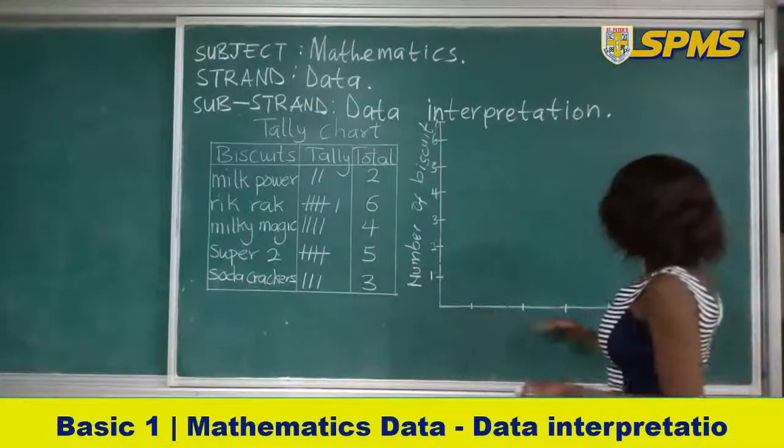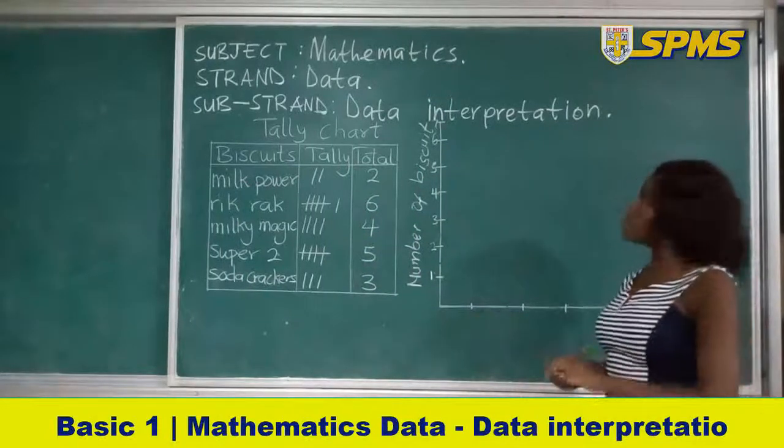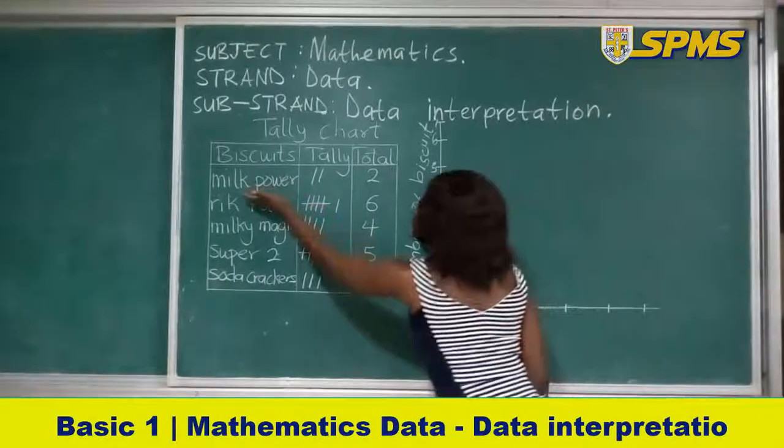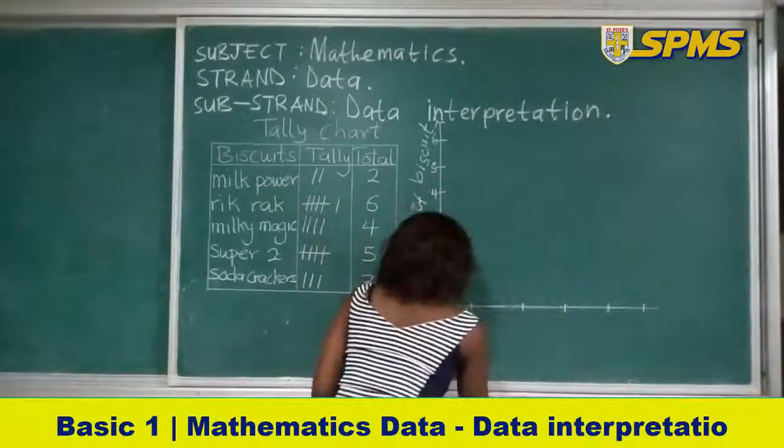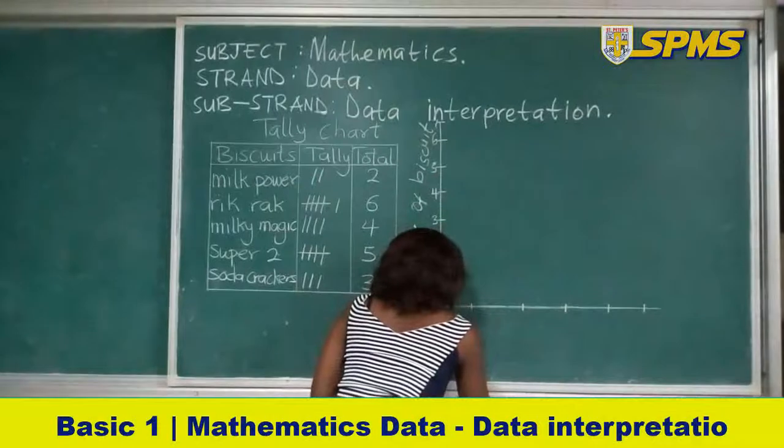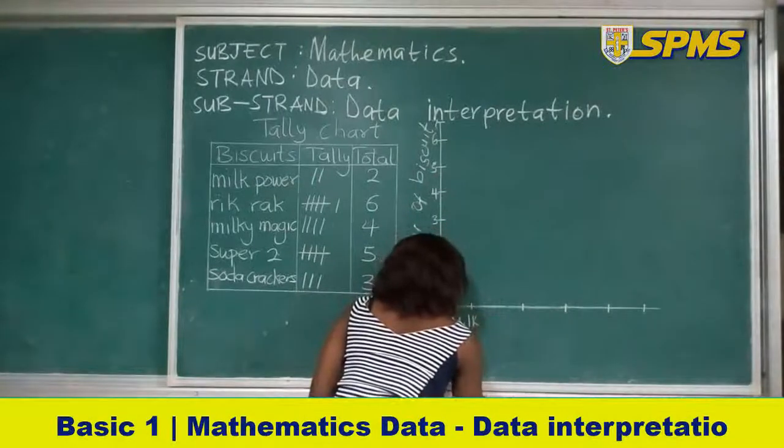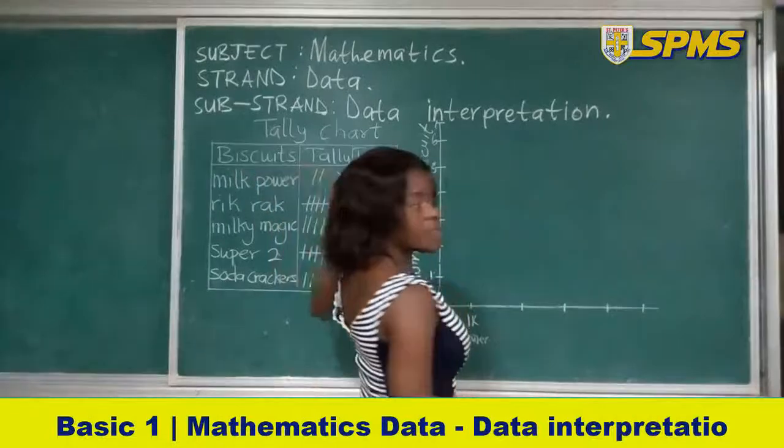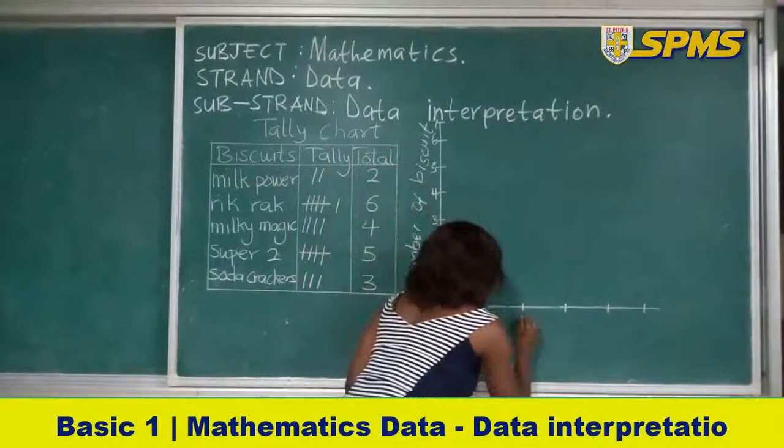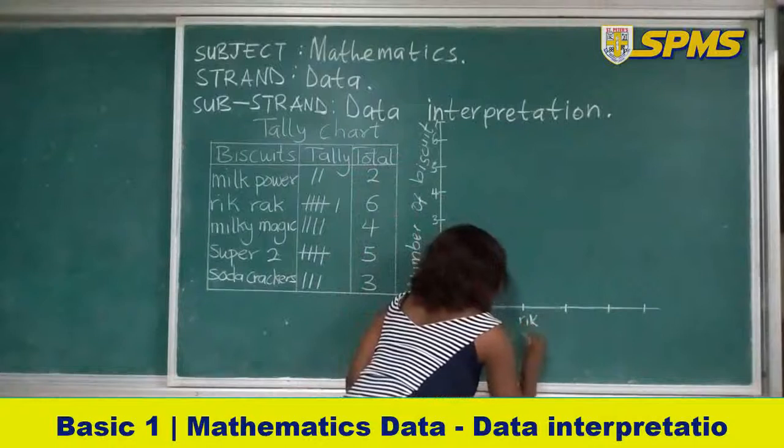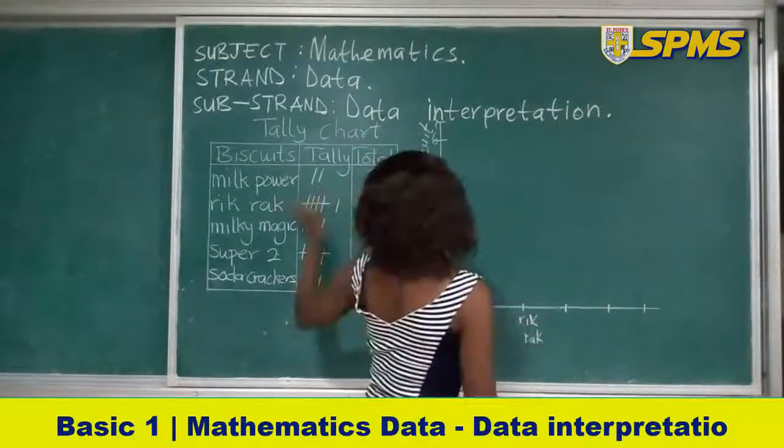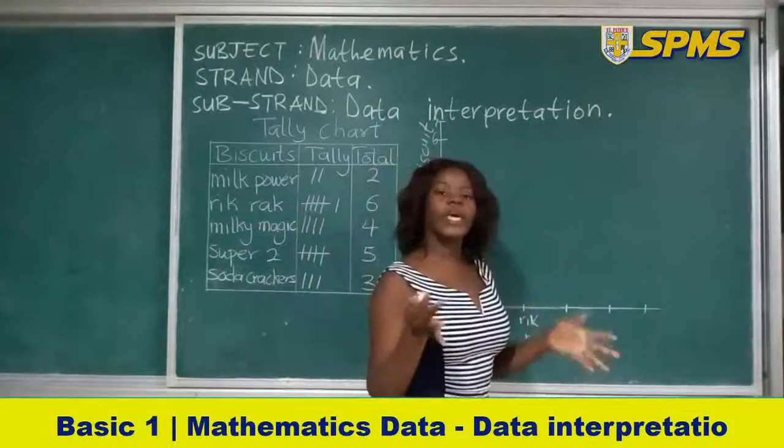Now the results, you're going to write the kind of biscuits. So now let's look here. What do we have? We have Milk Power, so you write your Milk Power here. The next one is Rit Rat. The next one you have is Milky Magic.